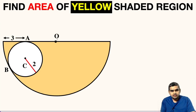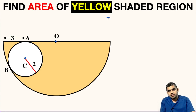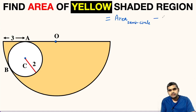In this question, a semicircle with center at point O is given. Inside it there is a circle at center C with radius 2 units. We have to find the area of this yellow shaded region. The area of this yellow shaded region will be equal to the area of this semicircle minus the area of this small circle.